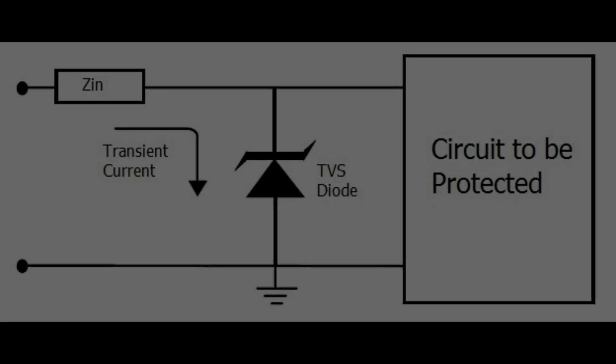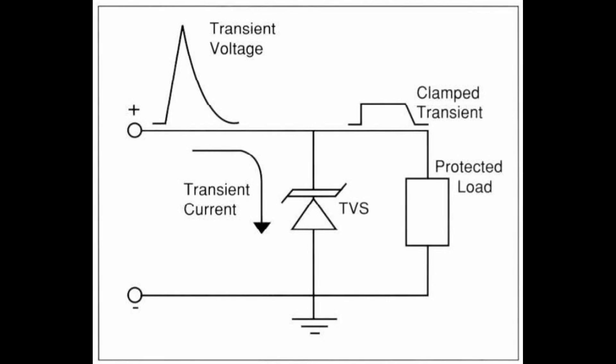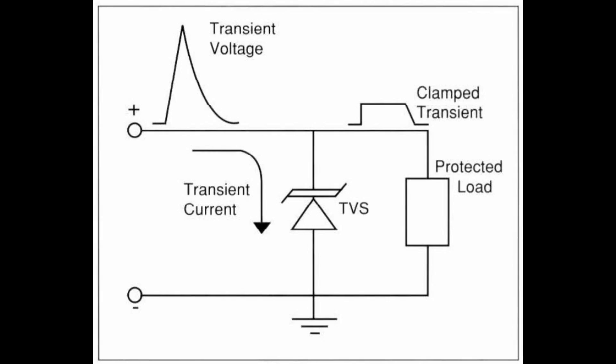This is TVS, the unidirectional TVS diode. Any transient voltage in the input side will be suppressed by TVS, and then only the voltage without any transient will be applied to the circuit to be protected. Assume that TVS diode breakdown voltage is 270 volt. So no voltage will be applied to the circuit beyond 270 volt. This is the application of TVS diode. It will remove any surge voltage coming in the line.